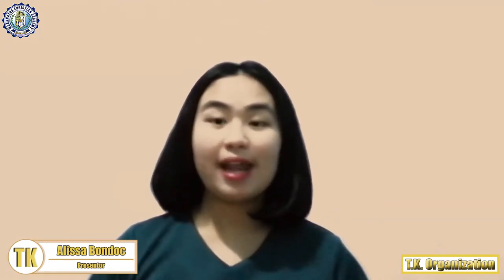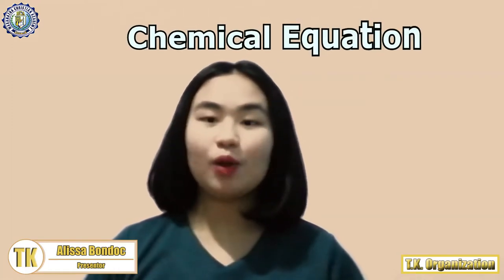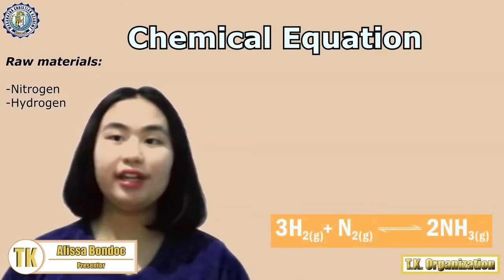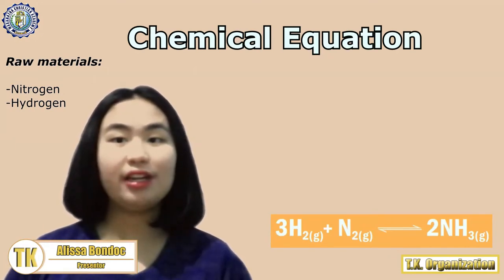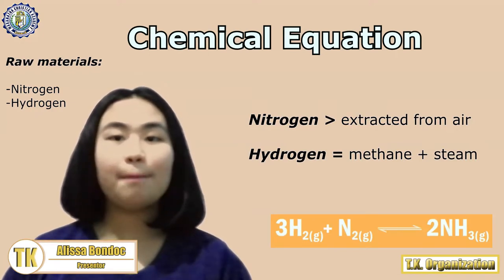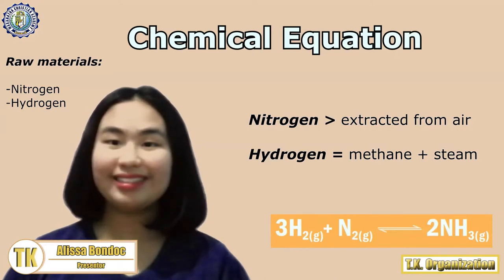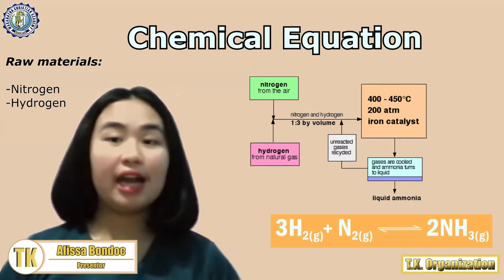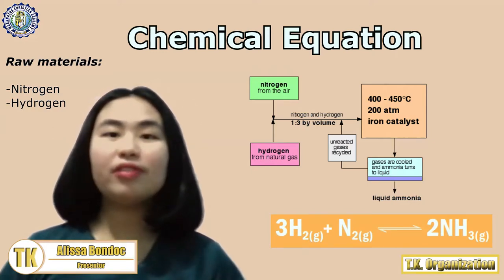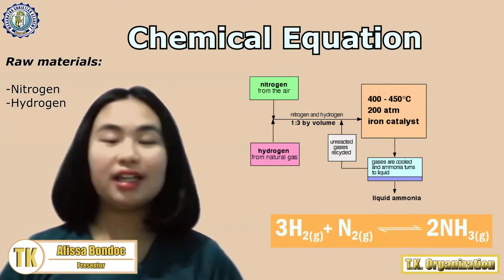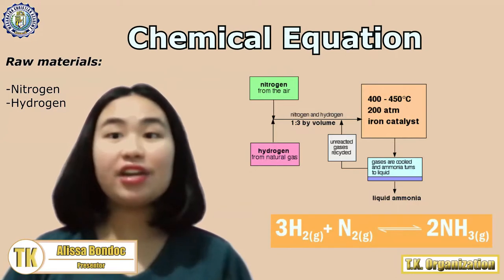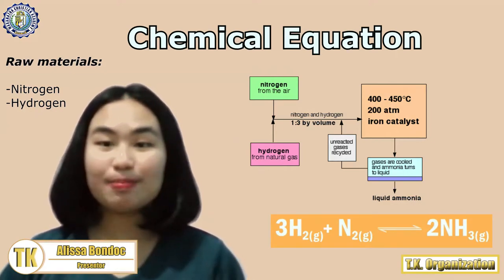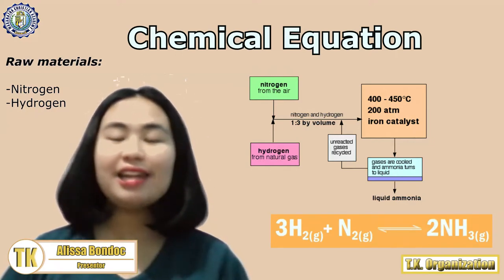Ammonia is produced by the Haber process. The Haber process uses nitrogen and hydrogen as its raw materials. Nitrogen can be extracted from the air, and by combining methane and steam, hydrogen is formed. At about 400 to 450 degrees Celsius and 200 atmospheres pressure, purified nitrogen and hydrogen are passed over an iron catalyst. Some of the nitrogen and hydrogen molecules react to form ammonia as a result. This is a reversible reaction — the reactants form products which can react together to give the reactants back, and ammonia can break back down into nitrogen and hydrogen.